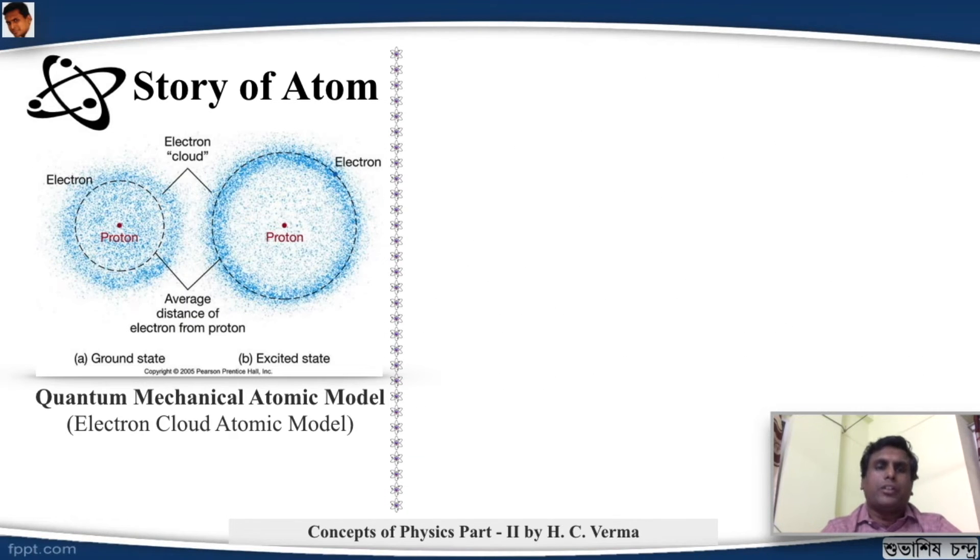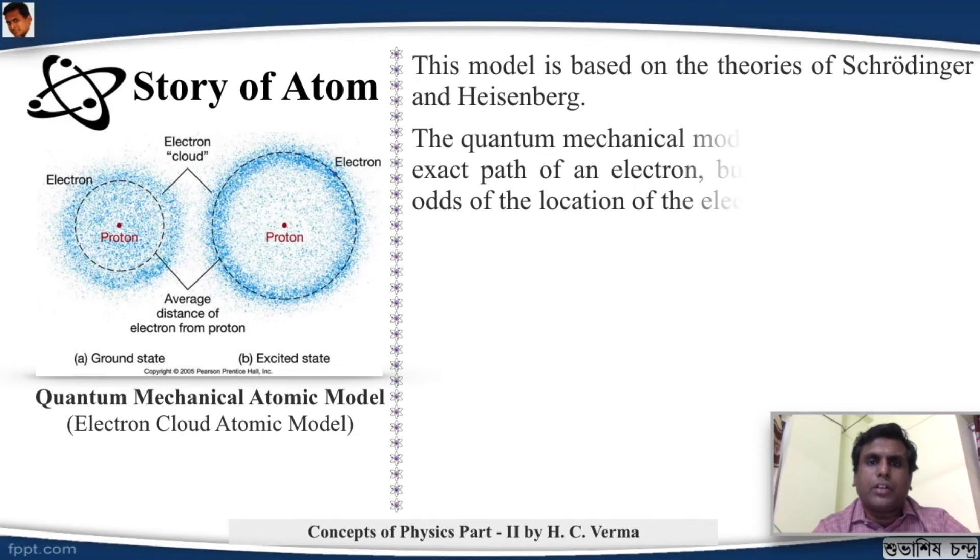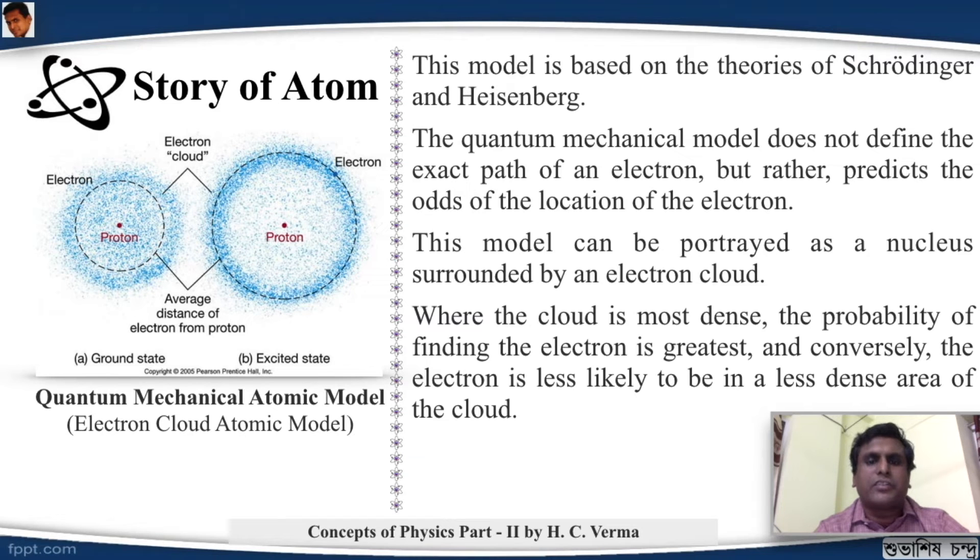This is the quantum mechanical atomic model or the electron cloud model. On the left is a ground state atom and on the right is an excited state atom. The model is based on the theories of both Schrödinger and Heisenberg. The quantum mechanical model does not define the exact path of an electron but rather predicts the odds of the location of the electron. This model can be portrayed as a nucleus surrounded by an electron cloud. Where the cloud is most dense, the probability of finding the electron is greatest. And conversely, the electron is less likely to be in a less dense area of the cloud. That is, the electron is somewhere around the proton, it is there. But we don't know where exactly it is. It is in a probability space.